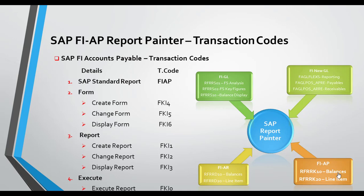To create a form use FKI4, to change the form use FKI5, and to display the form use FKI6. When you look at Accounts Receivable, it's FDI4, FDI5, and FDI6. The only difference is that the letter K is replaced with D for the AR transaction codes.